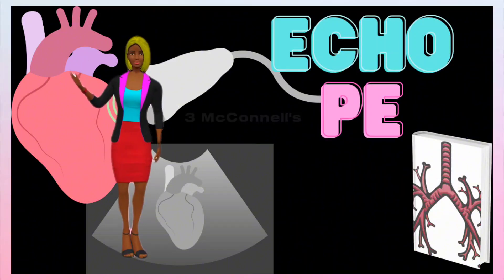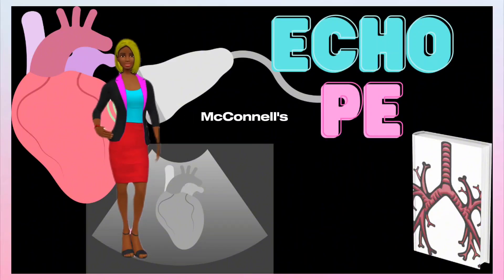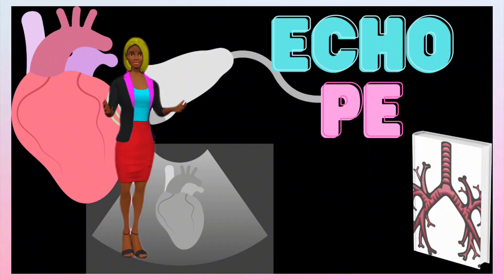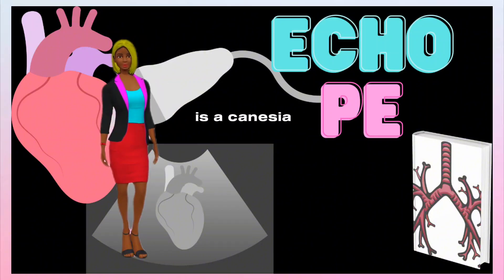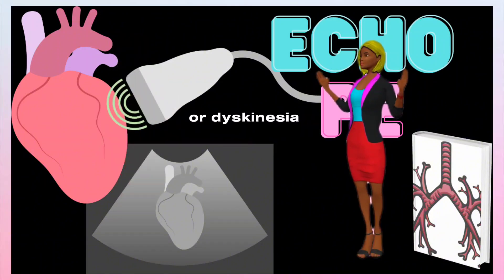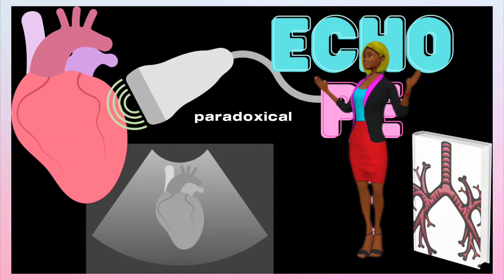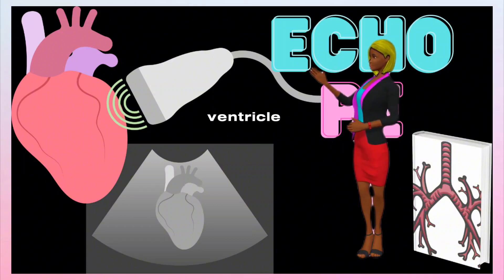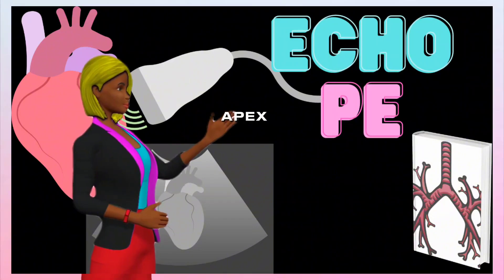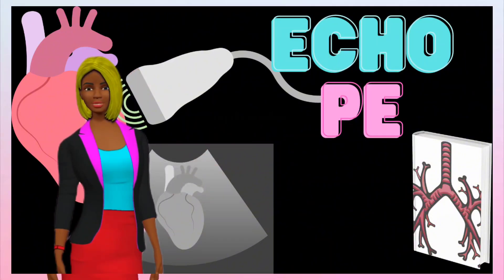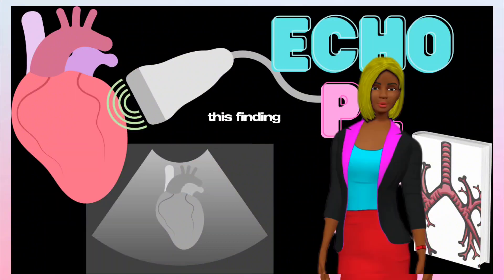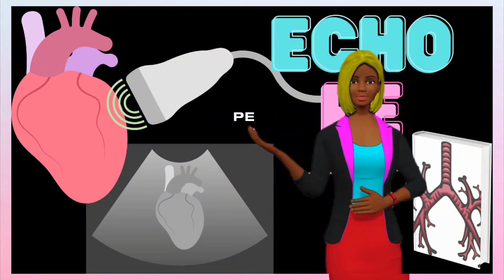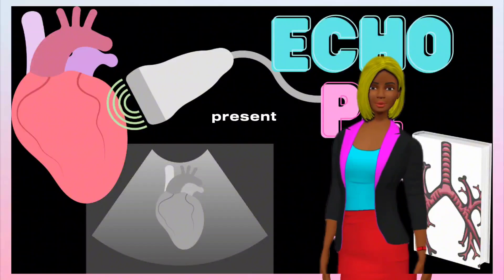3. McConnell's Sign. McConnell's Sign is a characteristic finding in PE where there is akinesia (lack of movement) or dyskinesia (paradoxical movement) of the mid-free wall of the right ventricle, while the apex of the right ventricle contracts normally. This finding is highly specific for acute PE but may not always be present.